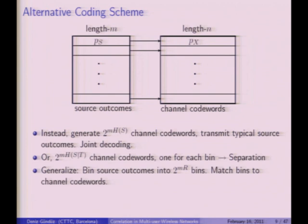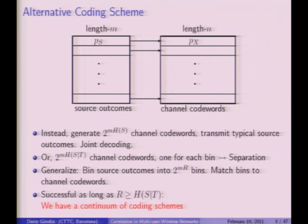We can actually have any bin size between the two extremes. Separation corresponds to binning into 2^{nH(S|T)} bins, while joint coding corresponds to no binning (bin size one). For any rate r greater than the conditional entropy H(S|T), you can still achieve optimal performance. This gives a continuum of coding schemes by varying r, with separation and joint decoding as two extremes and anything in between possible.